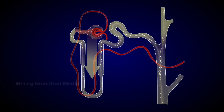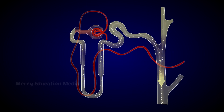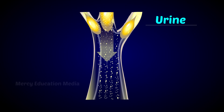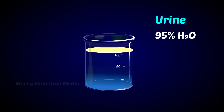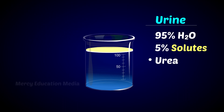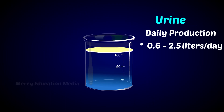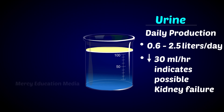All tubules secrete hydrogen ions to regulate the pH of body fluids. The filtrate is now called urine, which is about 95% water and 5% solutes including urea, uric acids, amino acids, and electrolytes. Daily urine production is about 0.6 to 2.5 liters per day. Production below 30 ml per hour indicates the possibility of kidney failure.